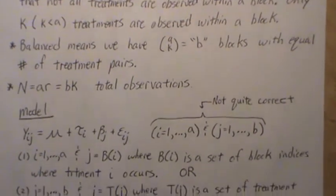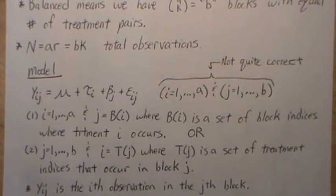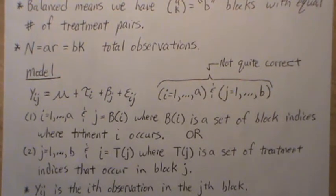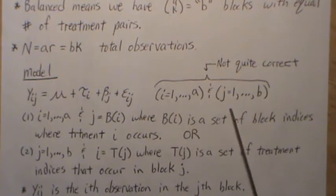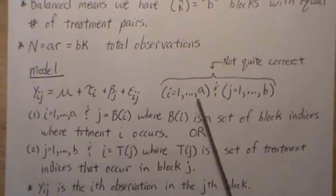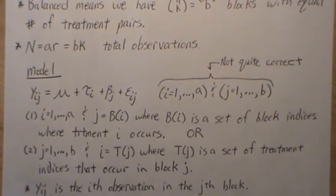The model in scalar form: Y_ij equals mu plus tau_i plus beta_j plus epsilon_ij. I goes from one to A (there's A treatments) and J goes from one to B (there's B blocks), but this notation is not quite correct.